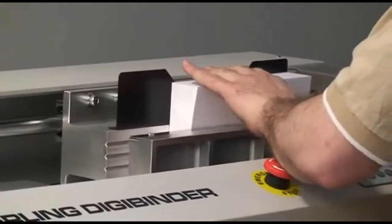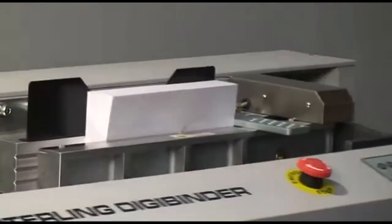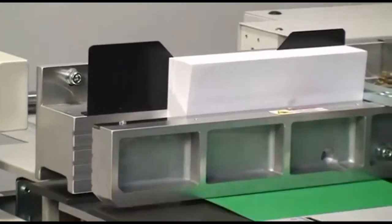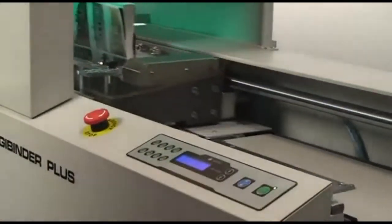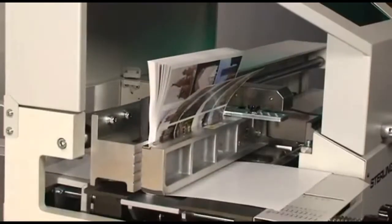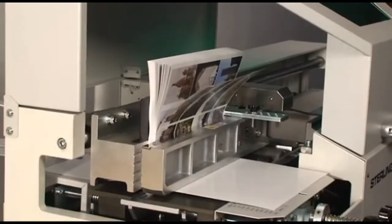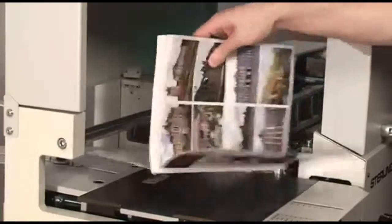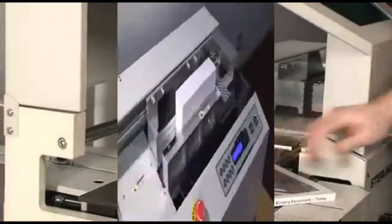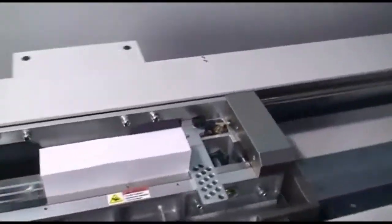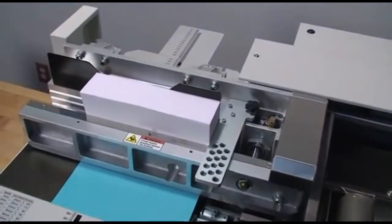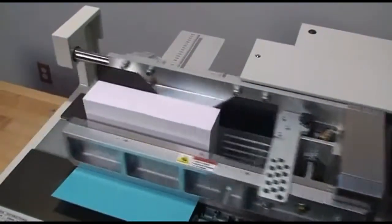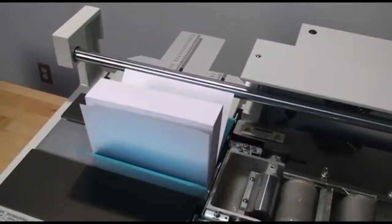The DigiBinder is the most sophisticated tabletop perfect binder on the market. It is perfect for on-demand and in-plant printers. Whether you are binding offset or coated stock, soft cover or case bound books, the DigiBinder does the job. Good for runs of three, three hundred, or three thousand, the future of perfect binding is here with the Sterling DigiBinder and the Sterling DigiBinder Plus.